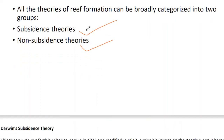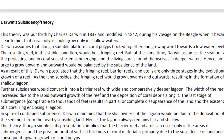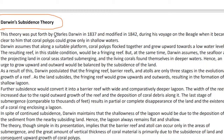First we are going to learn about the subsidence theory, in which Darwin's subsidence theory is very important. It falls under the first category. This theory was put forth by Charles Darwin, who was very much interested in the study of coral reefs and how atolls are formed. The theory was proposed during 1837 and modified in 1842, after he came across coral polyps and coral reefs during a journey.